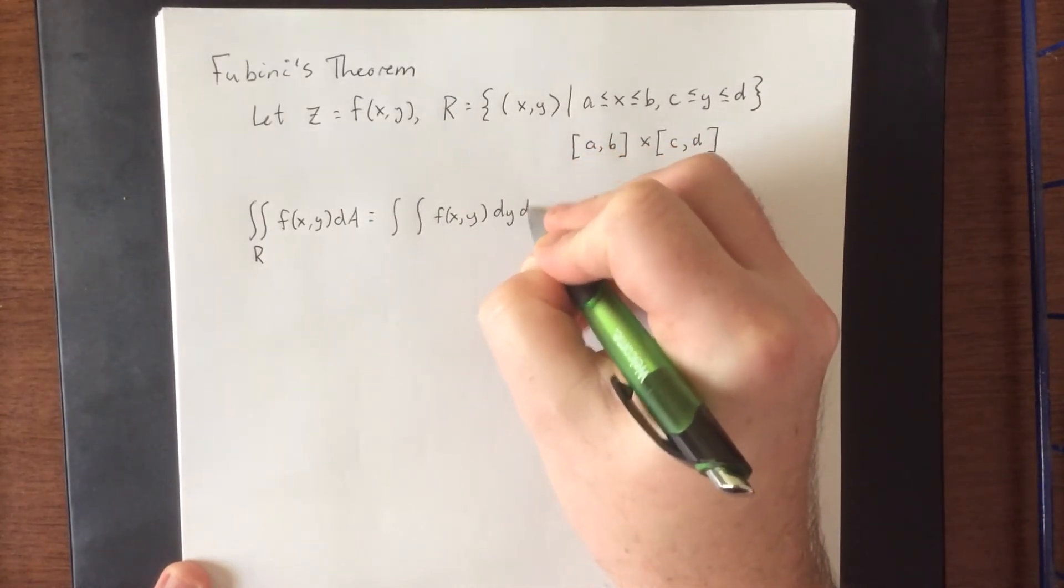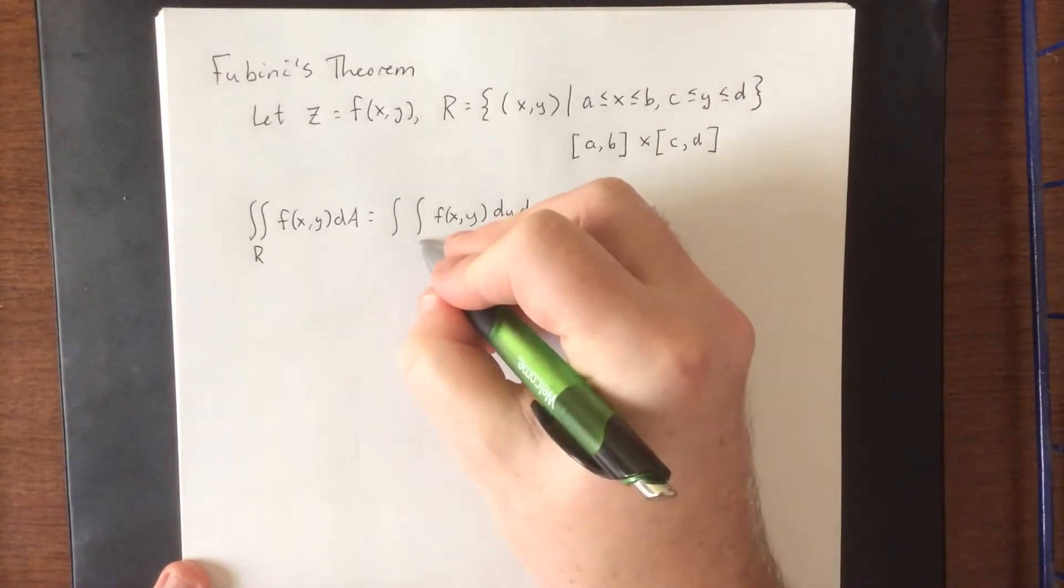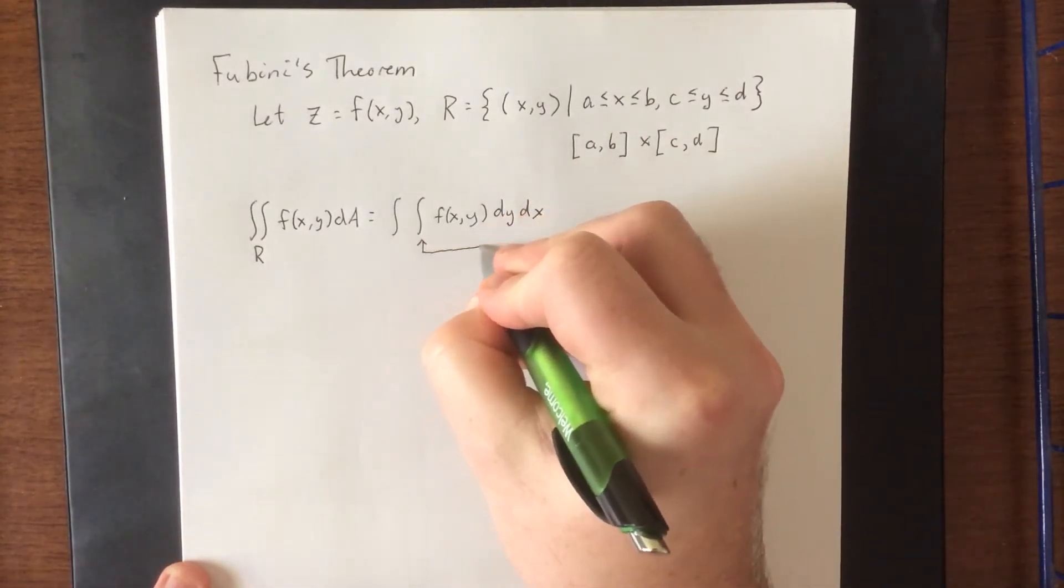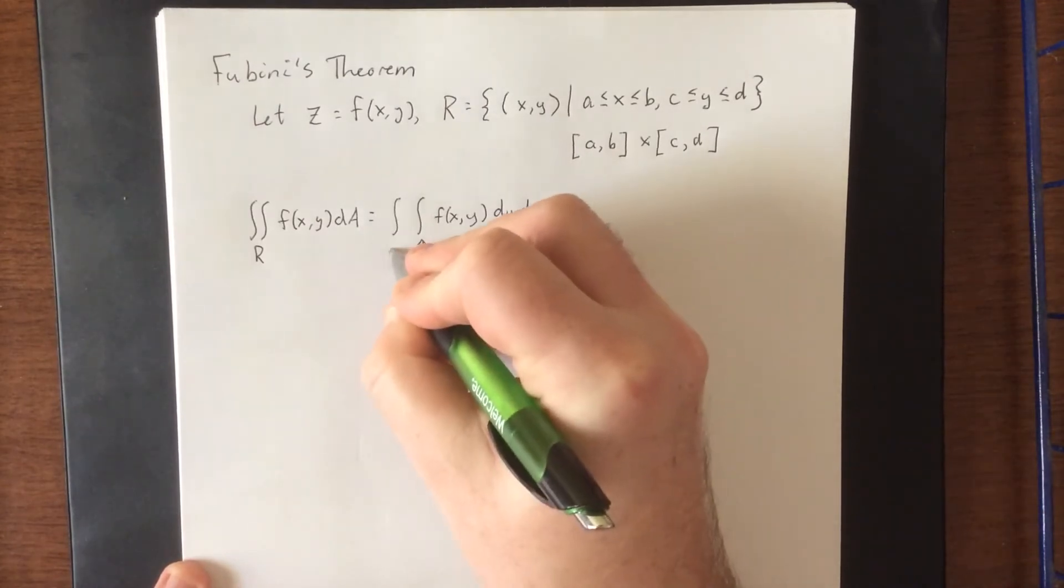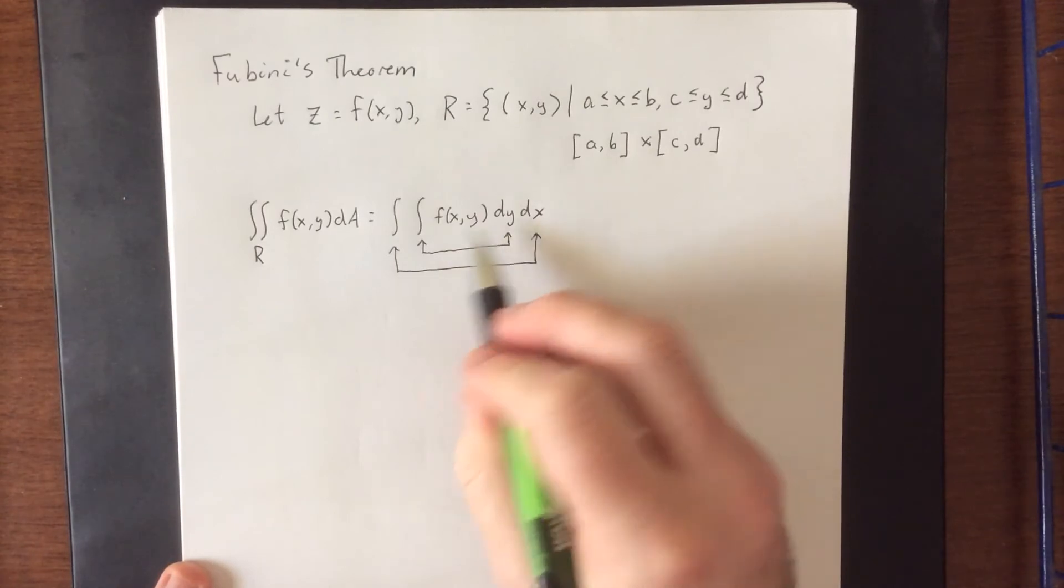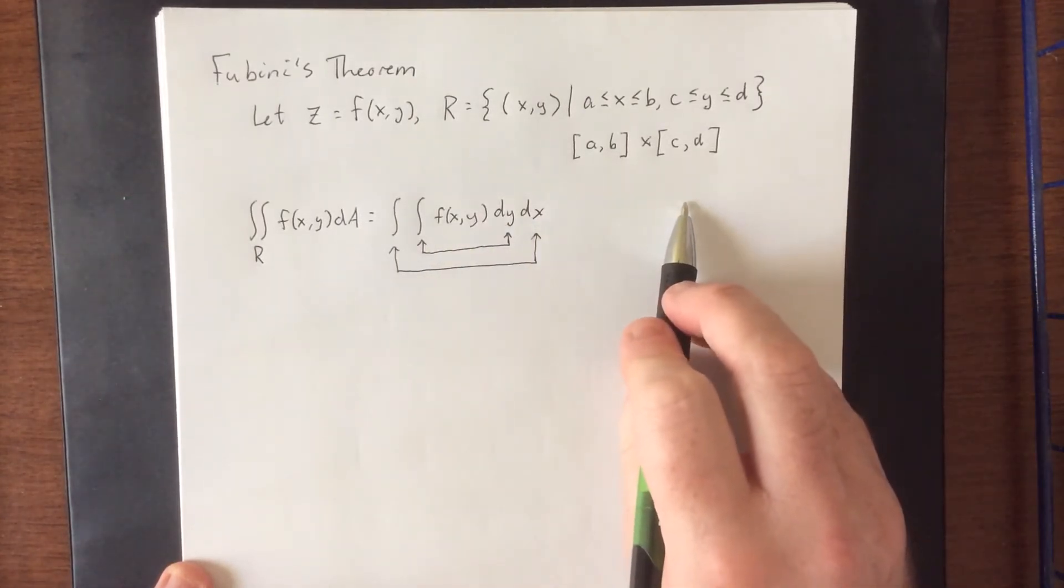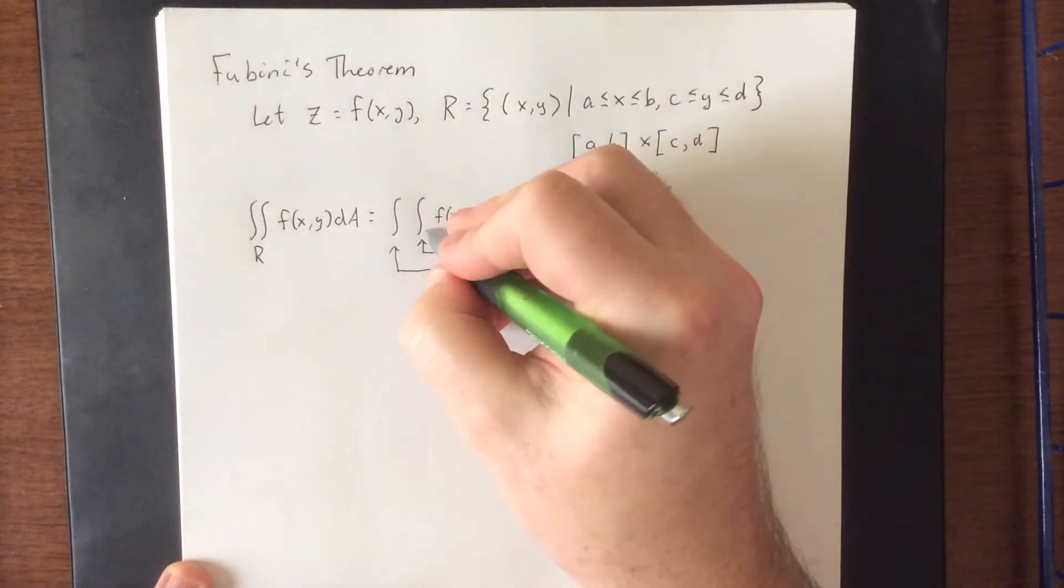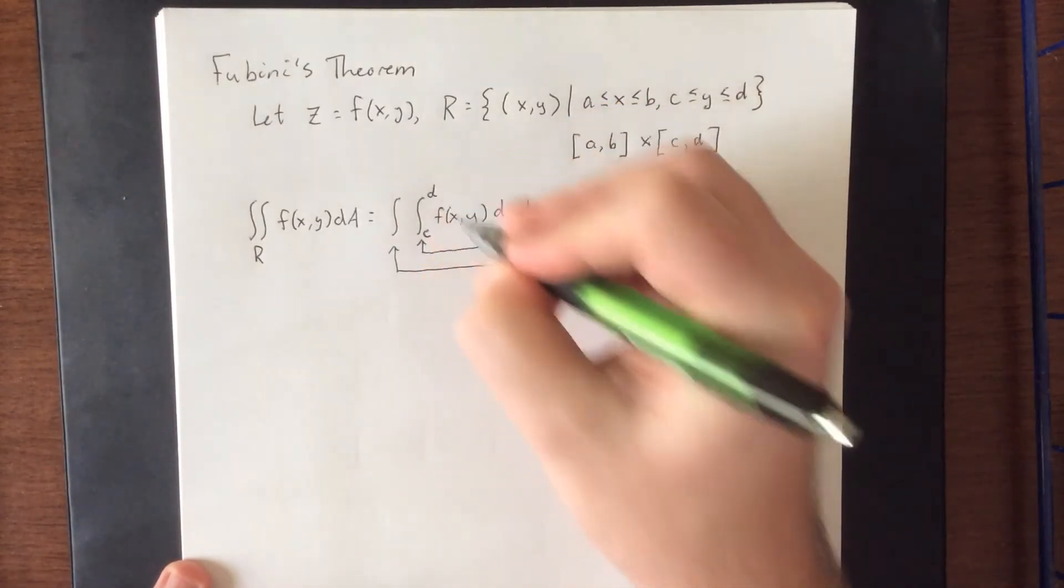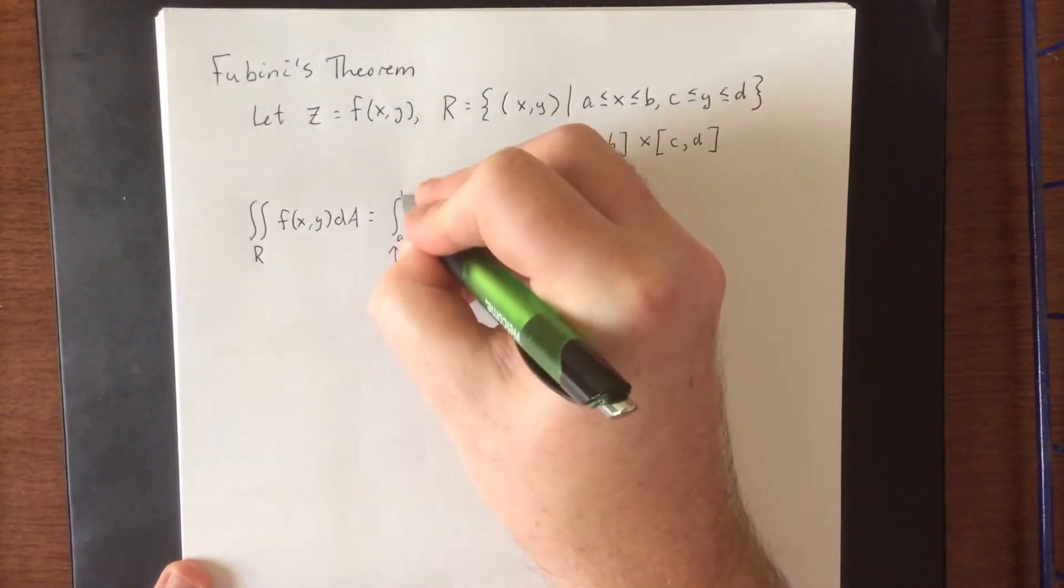Fubini's theorem also states that the order in which you integrate is up to you. The iterated integrals will work their way from the inside to the outside. This is indicating that the first iterated integral is going to be with respect to y. The bounds on y go from c to d. So the first iterated integral will have limits c and d, and for dx that'll be a and b.